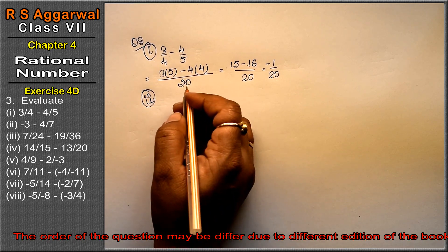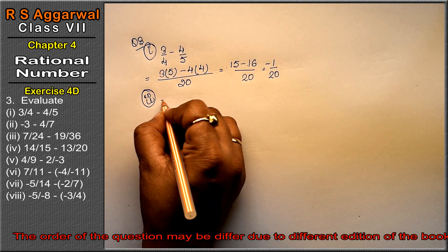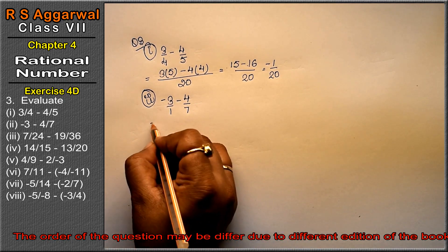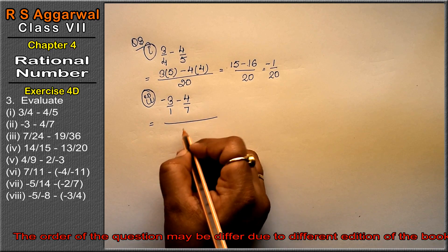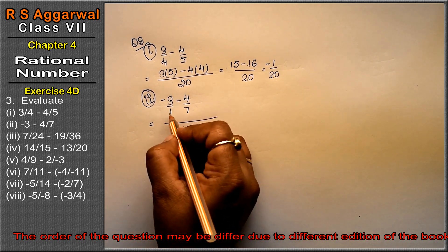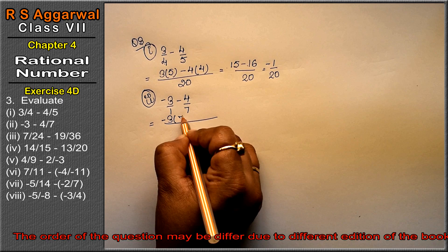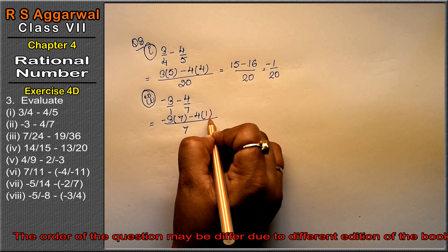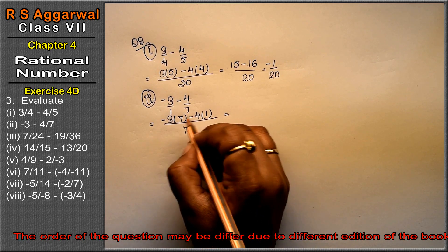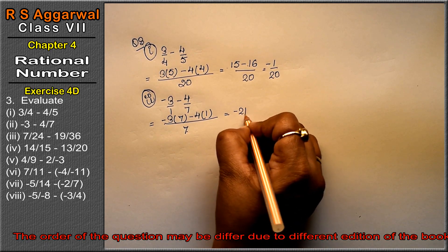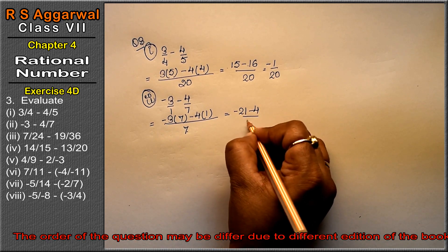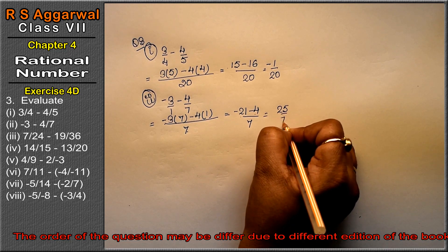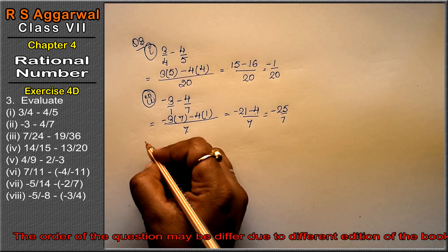Let's do second part. Second part is minus 3 minus 4 upon 7. LCM of 1 and 7 is 7. Minus 3 into 7 is minus 21, minus 4 upon 7. So this becomes minus 7 times 3 is 21 minus 4 upon 7. Both minus are added, so minus 25 upon 7 is the answer.